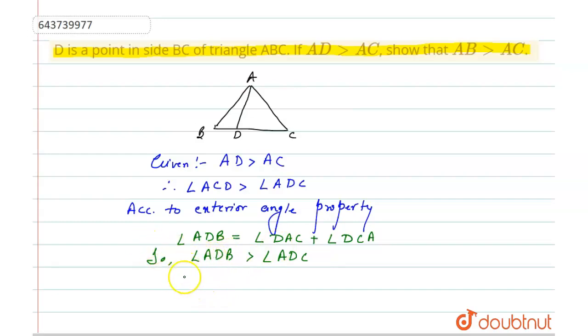angle ADB is greater than angle ADC. So we can write AB because AB is the opposite side to angle ADB, and AC is the opposite side to angle ADC. So AB will be greater than AC.